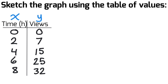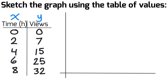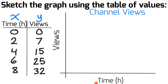Let's begin by identifying our table of values on the left-hand side. The first step is to make our Cartesian plane. We're looking at quadrant one here, where time in hours is on the x-axis and views is on the y-axis. The title would be something like 'Channel Views.'